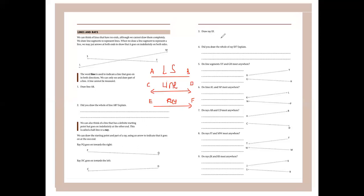You're asked to draw ray EF. You would draw something like this — E to F — make sure you use a ruler because you are drawing lines. Did you draw the whole of ray EF? If you left out the arrow, then you did not draw the whole of ray EF; you only drew a segment of it.